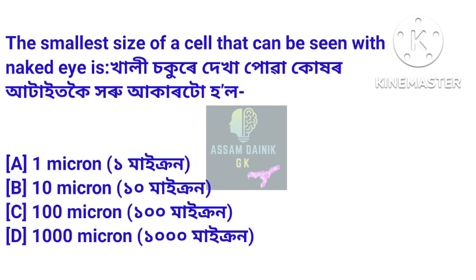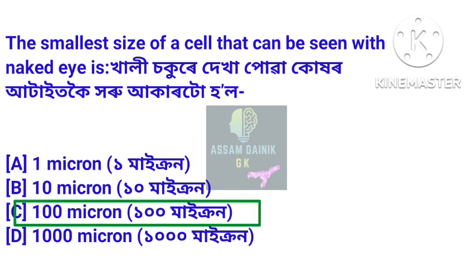Next question: What is the smallest size of a cell that can be seen with the naked eye? Answer: 100 micron. The smallest cell visible to the naked eye is 100 micron.